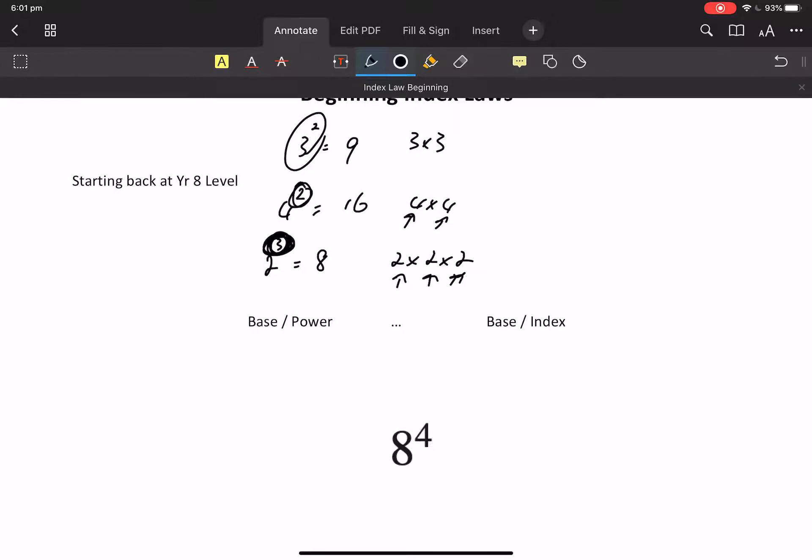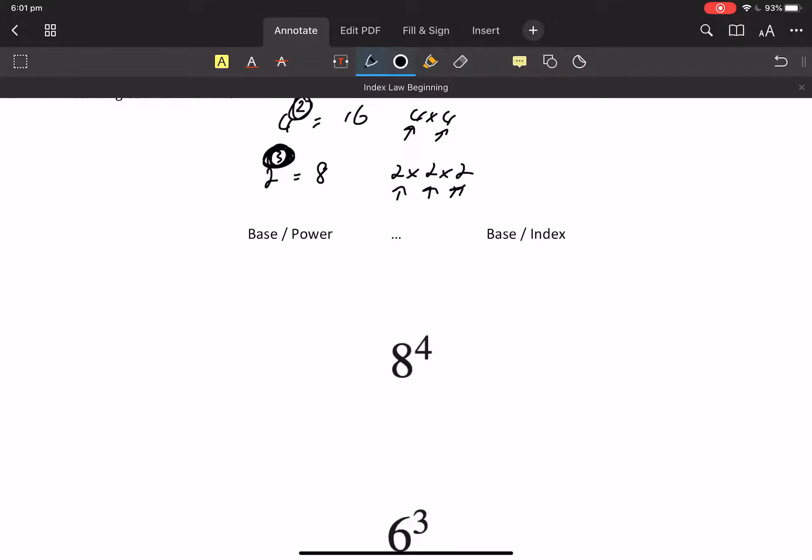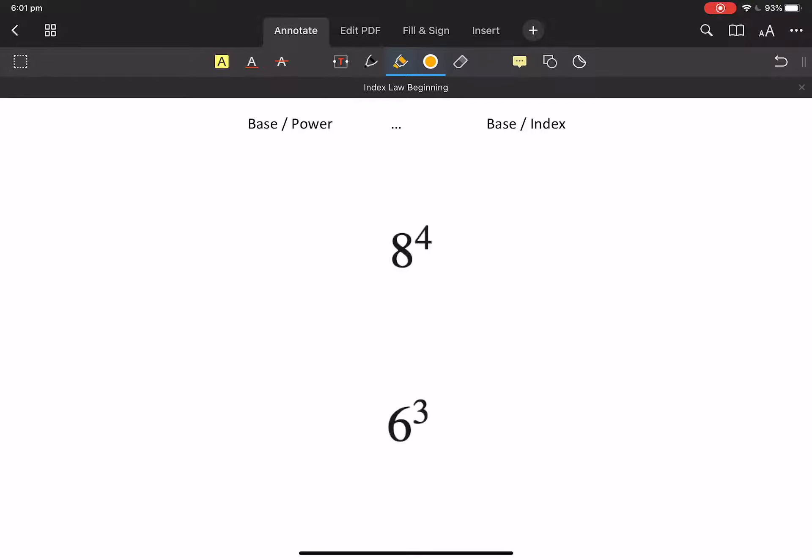So that's where we're first introduced to index laws. Let's get some terminology down. The number at the bottom, the big number, we're going to call that the base. So of 8 to the 4, the base is 8. 6 to the 3, or 6 to the power 3, the base is 6. Base, it's the big number on the bottom.